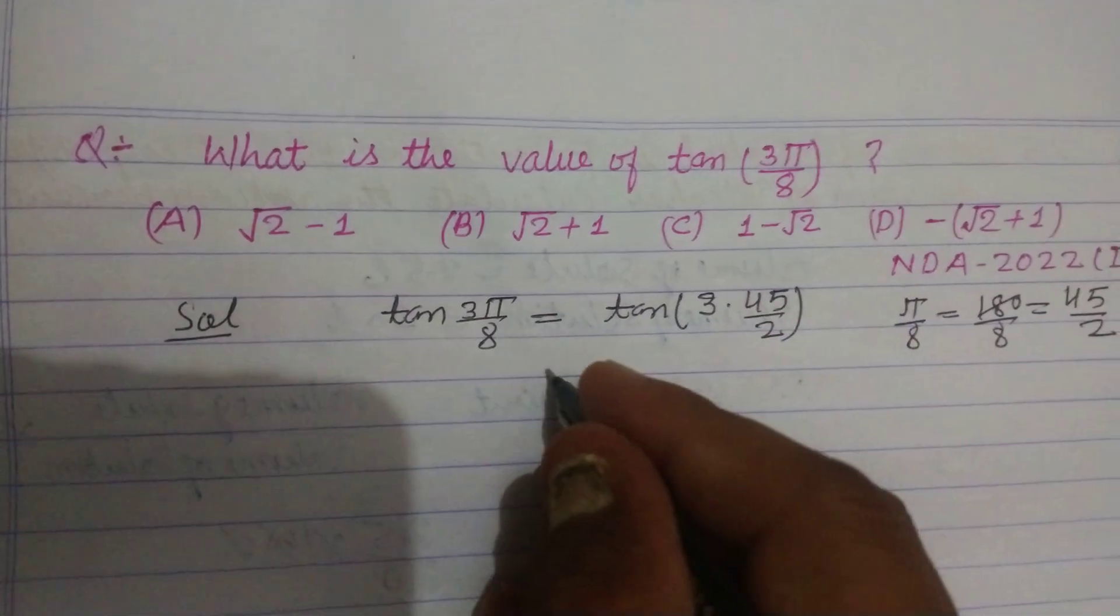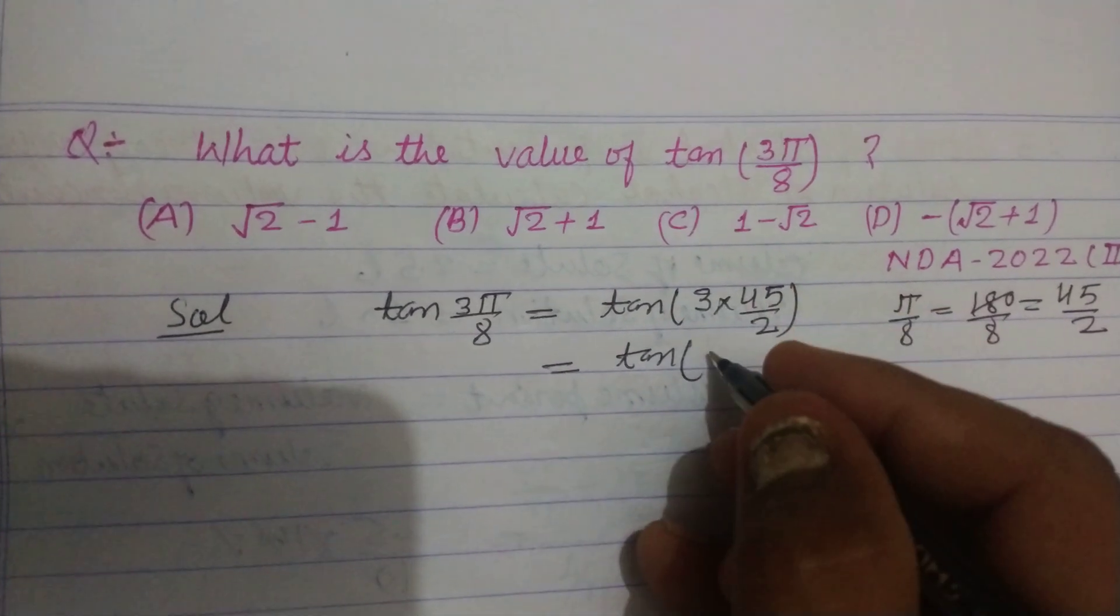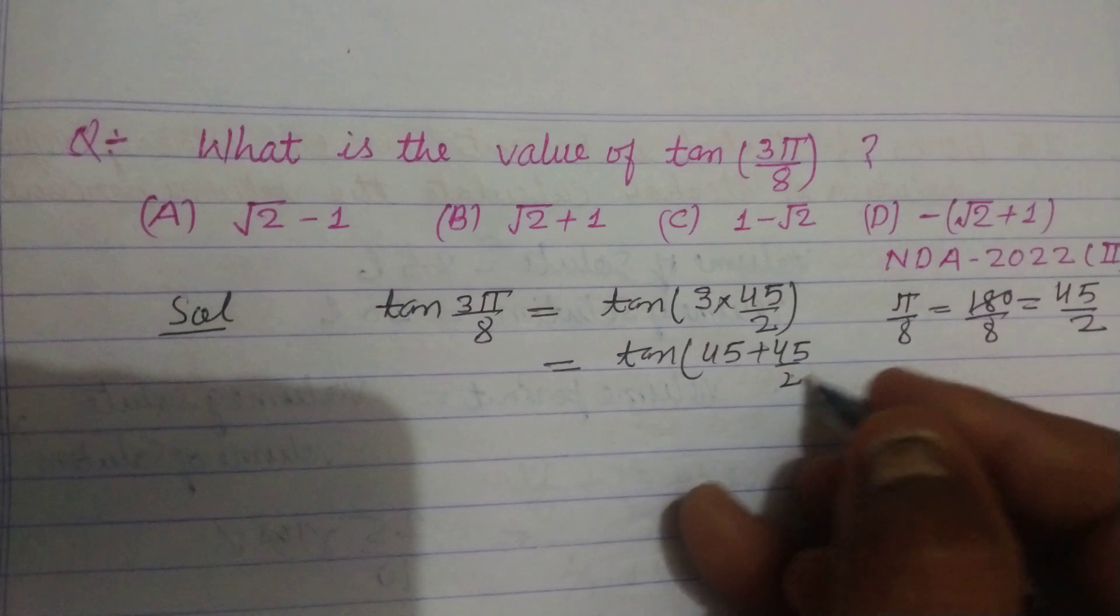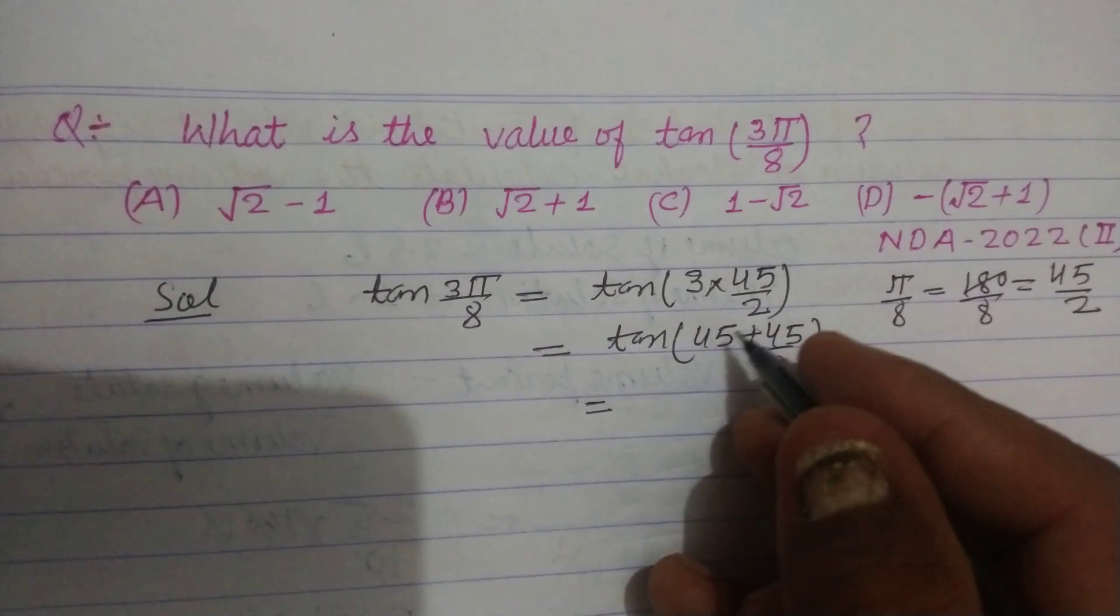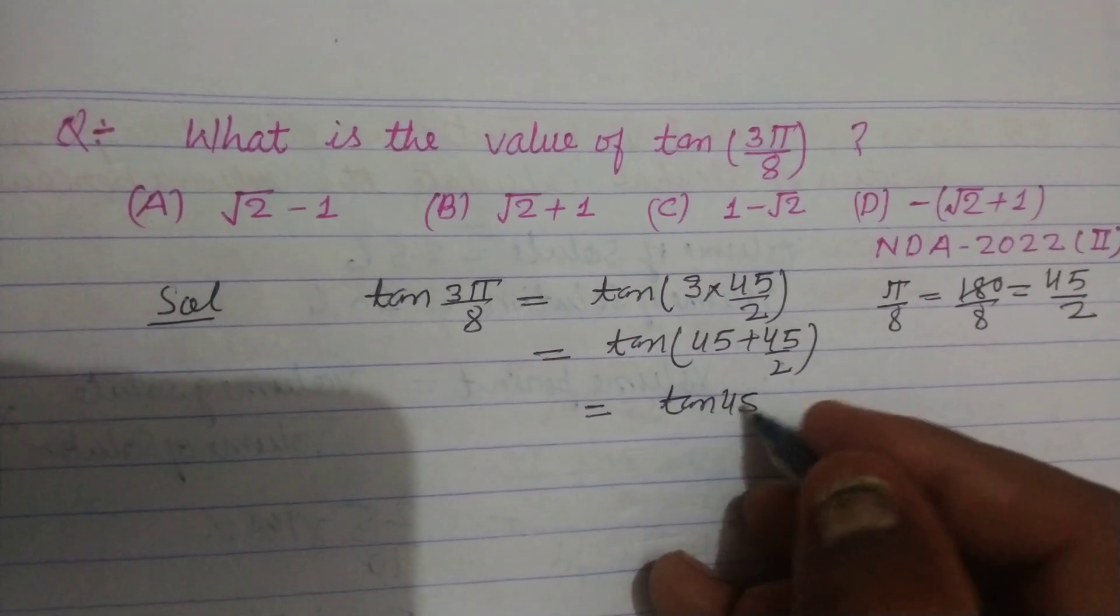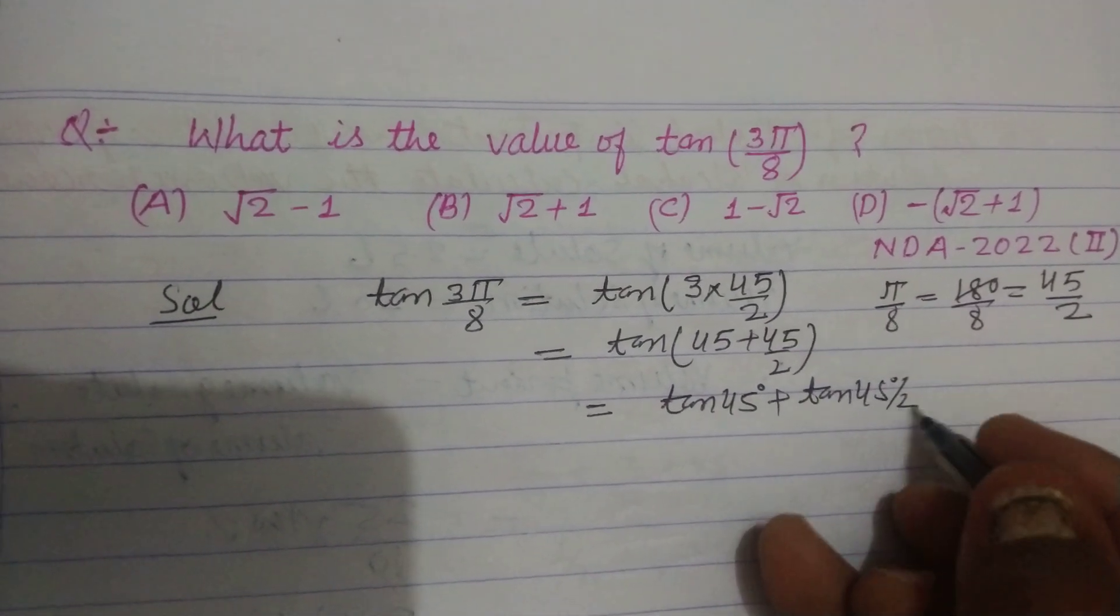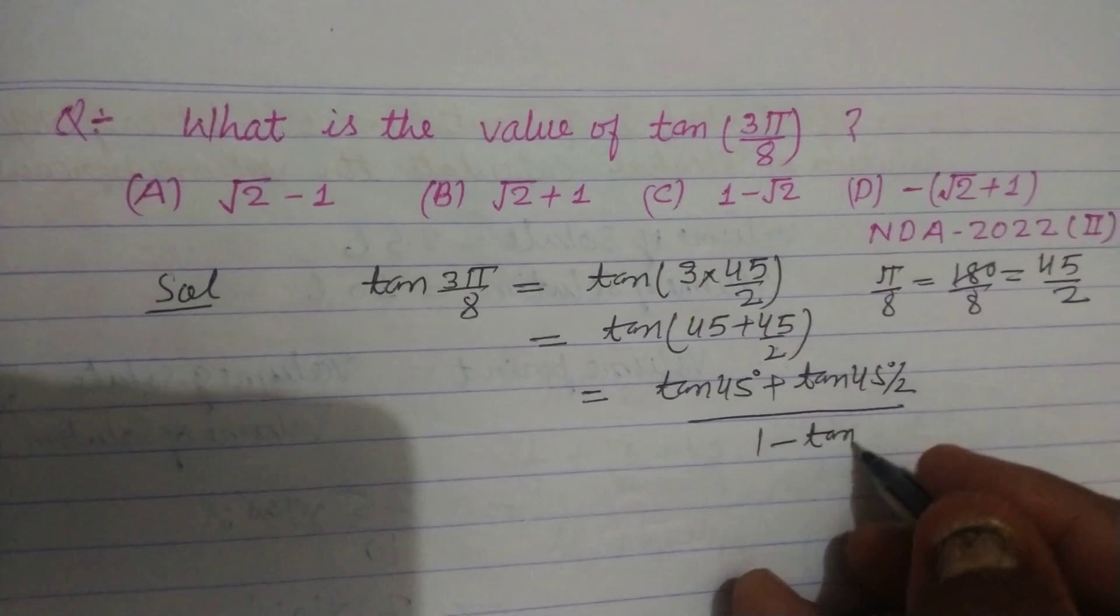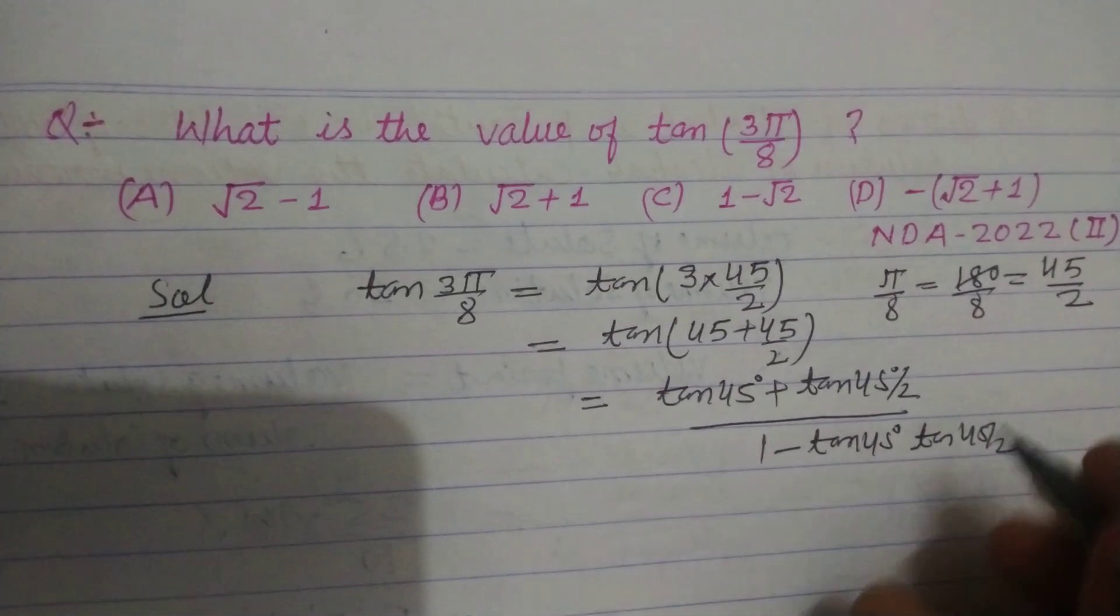So tan(3×45°/2) can be written as tan(45° + 45°/2). Now we expand it using the addition formula: tan(a + b) equals (tan a + tan b) upon (1 - tan a × tan b).